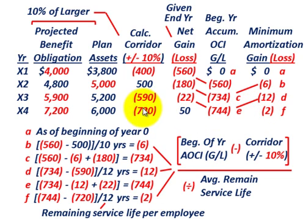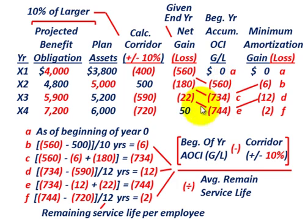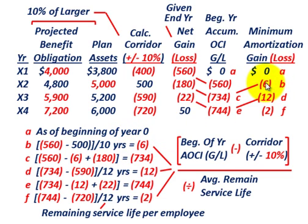So you can see what's happening throughout this problem. The end-of-year net gain or loss becomes the beginning-of-year accumulated other comprehensive income gain or loss, kept in a separate account. Then based on that beginning-of-year amount, you subtract the calculated corridor amount and divide by the average remaining service life to determine the minimum amortized gain or loss. The corridor amount is simply 10% of the larger amount between your projected benefit obligation and your plan assets.